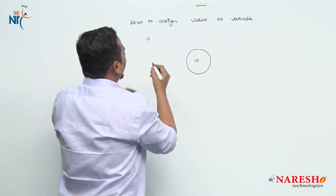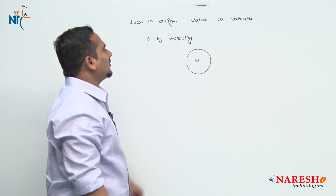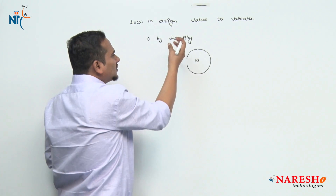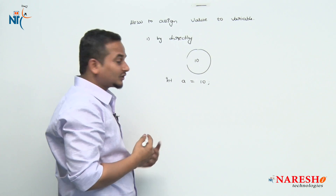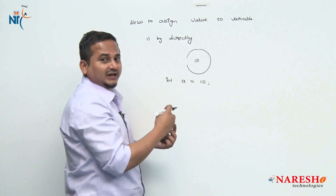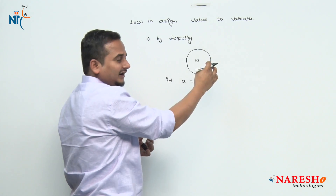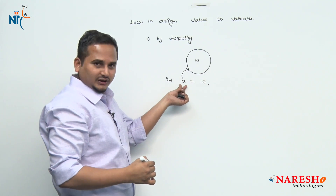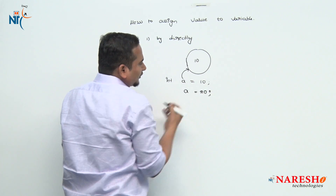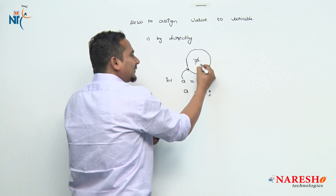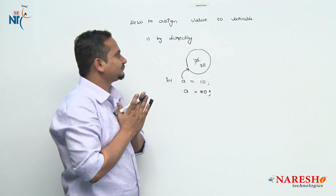The first way to assign a value to a variable is by directly. Directly means we are assigning the value directly into the variable. For example, int a = 10. This value 10 I am placing into variable a. Internally, one memory will be created and that memory is pointed by variable a. Whenever we write a = 20, then this 10 will be replaced with 20. This is the first way of assigning a value to a variable.